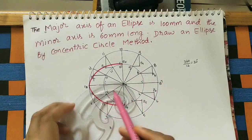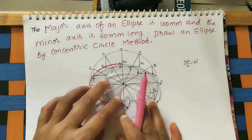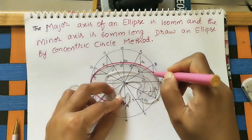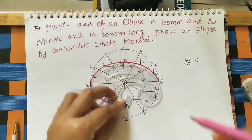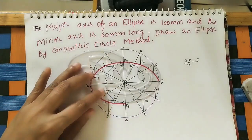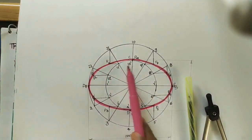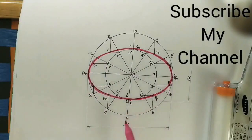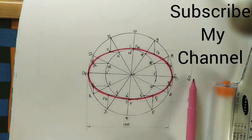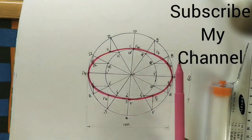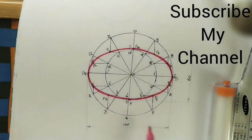For the remaining points, take the same French curve, keep it to match the points, reverse it, and join all the points. This completes the ellipse using the concentric circle method. Mark the major axis dimension AB outside the diagram, and the minor axis CD as 60 mm. Dimensions should always be at the middle of the dimension line, marked outside the diagram with extension lines. Thank you for watching.